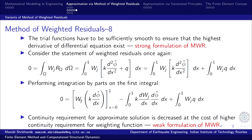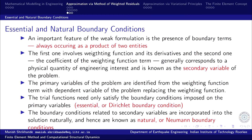By replacing the weighting function with the unknown of the problem, φ, we can identify the primary variable. If the weighting function appears as it is — without any derivative — then the primary variable of the problem is simply φ. The basic unknown of the problem is the primary variable, and primary variables are identified from the weighting function term with the dependent variable replacing the weighting function.